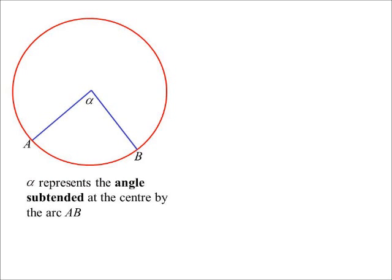When we join points A and B to another point, that's called subtending. Angle alpha is the angle subtended by arc AB at the center. Subtended means you take the endpoints of the arc and join them to a third point, which creates or subtends an angle.